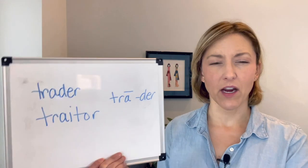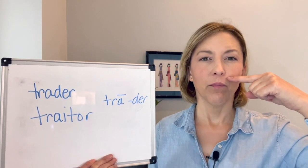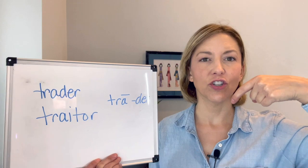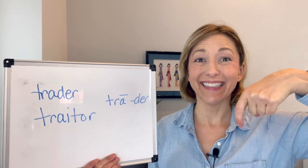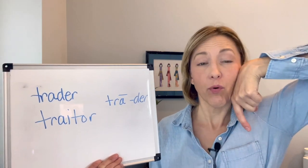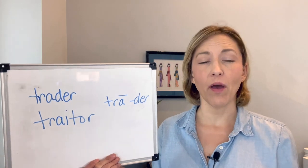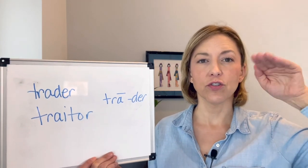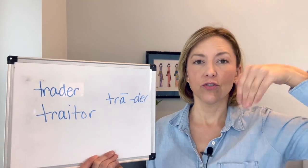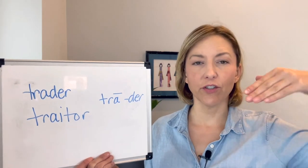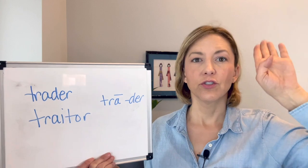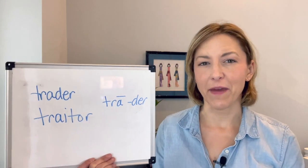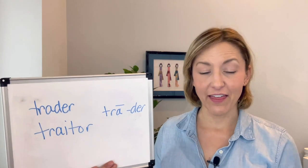So what I'm doing here is my tongue is here, my lips are ready for the R — 'tr.' I move my tongue down to the bottom of my mouth and pull the back of my tongue up for that R. You can do 'tr, tr' — that's a little bit harder for me but I can do it if I think about it.